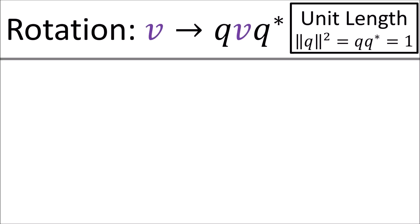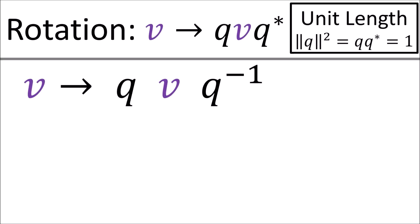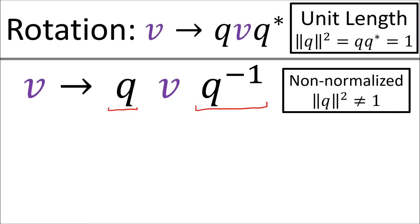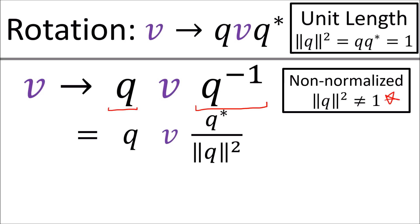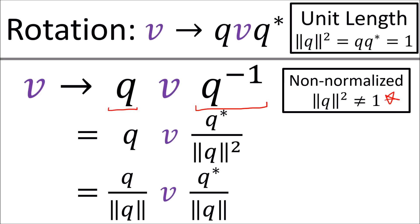You might also see this formula written with q on the left and q inverse on the right. This formula works if q is not normalized and has a length not equal to 1. The denominator for q inverse forces both q's to have length 1.